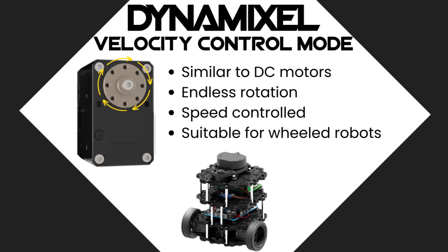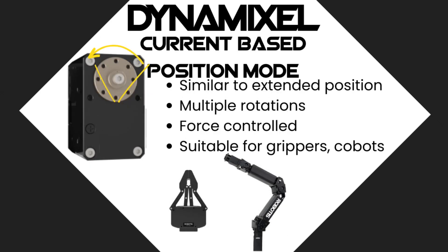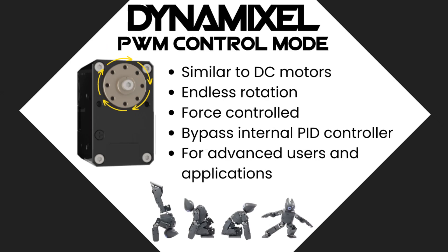Then we have velocity mode, where users specify a goal speed for the endless rotation of the Dynamixel. Current control mode is similar to velocity mode, except instead of specifying an output speed, we specify a current for output force. Current-based position control mode brings this force-limited motion to position-based control modes. The final supported mode is PWM mode, or pulse width modulation mode, where users specify the desired PWM output to be sent to the Dynamixel's internal DC motor, allowing more direct control of the actuator's behavior.